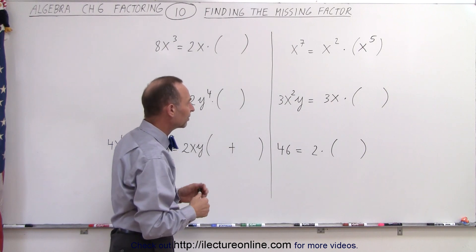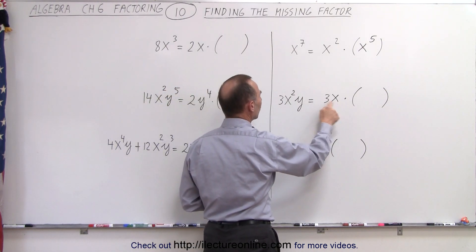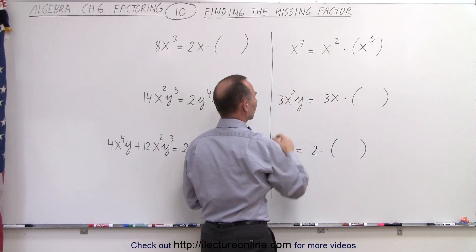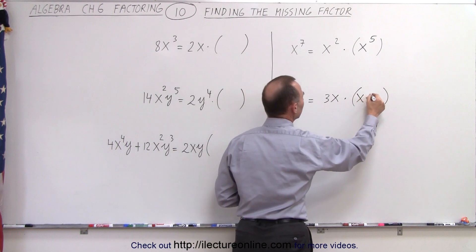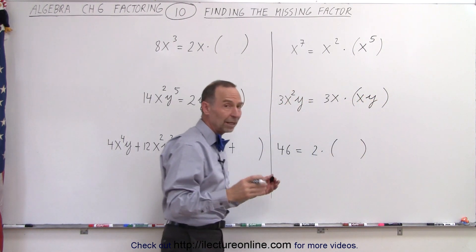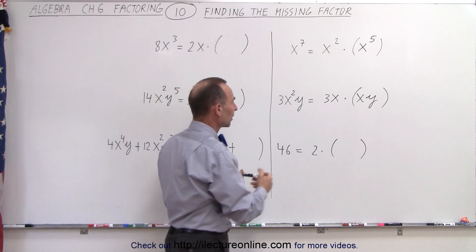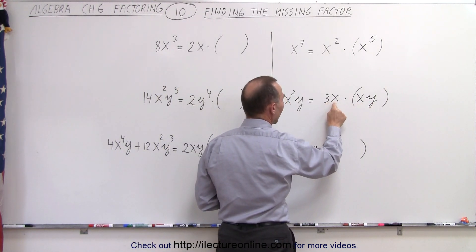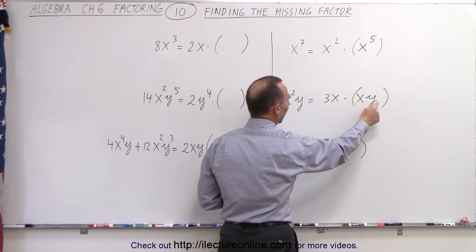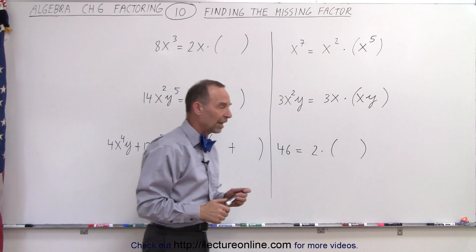What's the missing factor in our next exercise? Notice we already have a 3. We already have one of the x's, but we're missing the other x, which means we need another x. And we don't have the y here, so we need a y. It's always good to multiply the two factors to make sure we have what we're supposed to get. So 3x times xy gives us 3x²y. So yes, we found the missing factor.